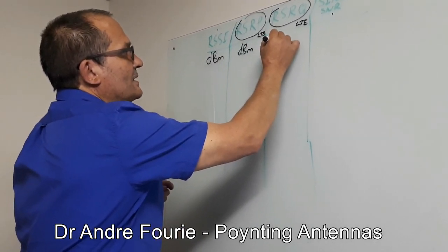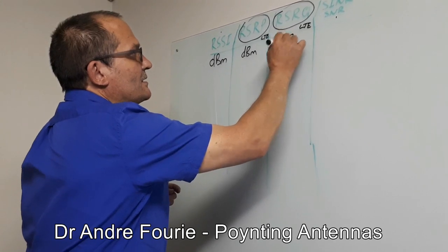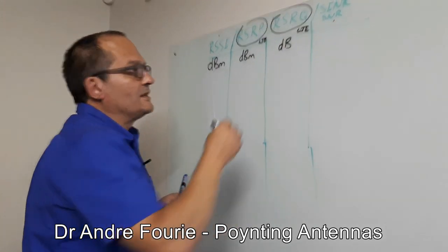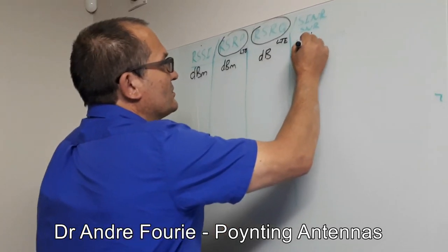These ones here are ratios, just dB. In other words, it just tells you how much signal relative to noise, and this is also dB.